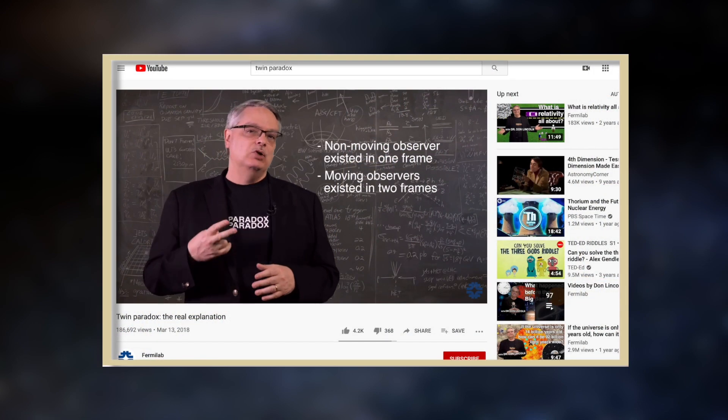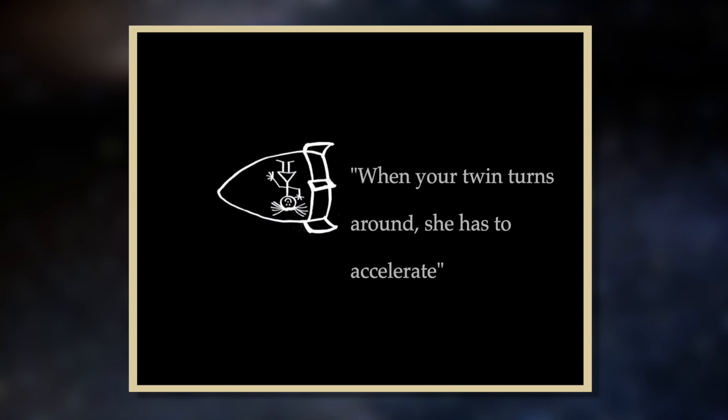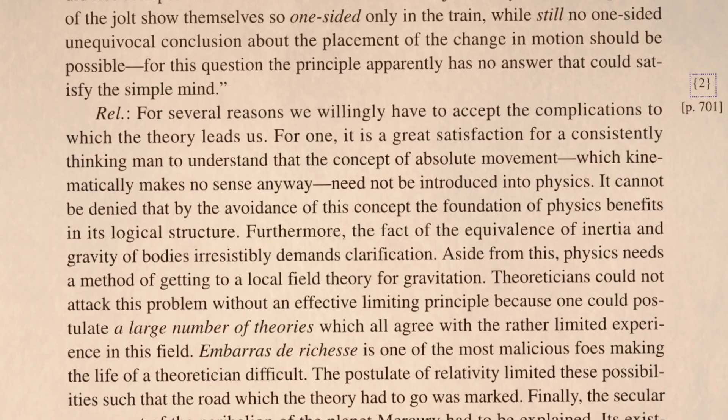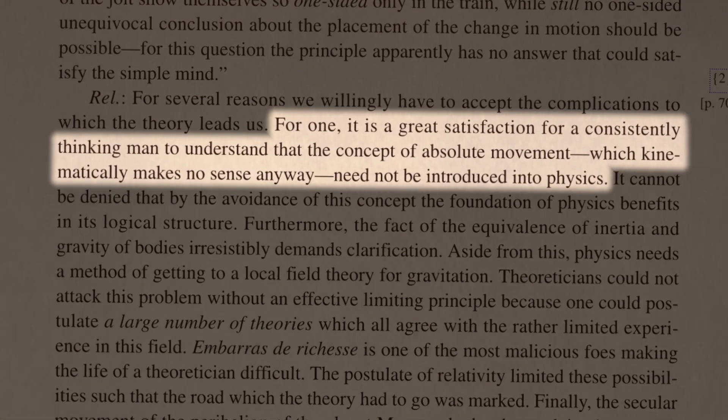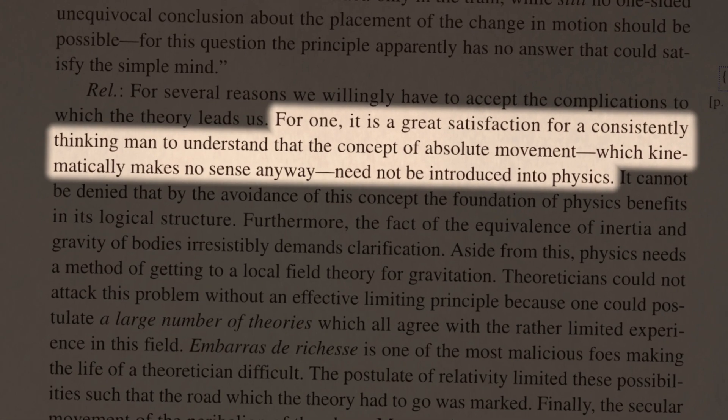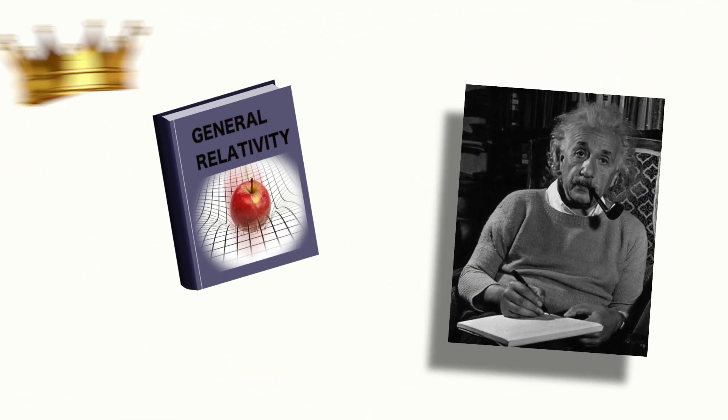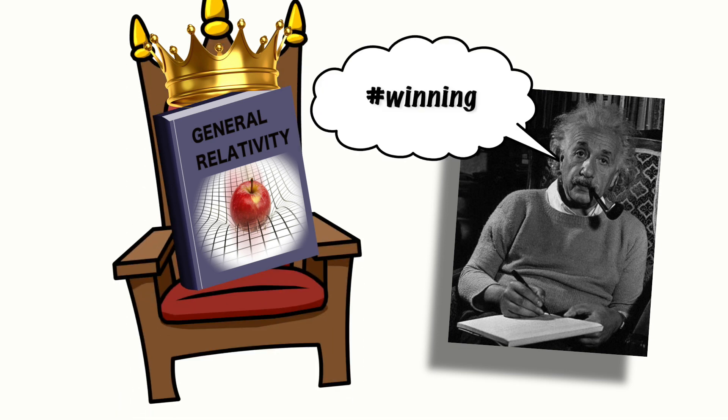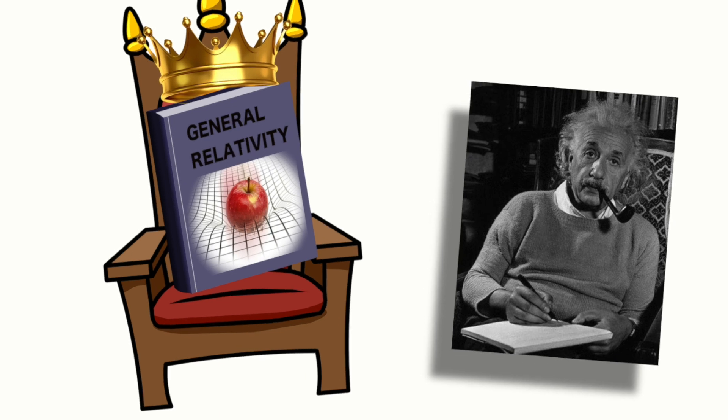Otherwise, if you wished to resolve the paradox in special relativity, you'd have to begin by asserting that acceleration is somehow a privileged, absolute form of motion. Absolute motion was an idea that Einstein strongly disliked, and which he claimed, kinematically made no sense anyway. Einstein's answer seems to wrap everything up in a nice bow, so is there any reason to remain skeptical of his solution? Well, it turns out, yes.